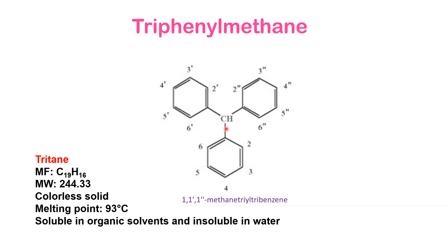If you have not yet seen the video on diphenylmethane, please watch it first — then it will be easy to understand triphenylmethane. As the name says, it is tri, meaning three phenyl groups — three benzene rings present as substituents on the central methane. Out of the four hydrogens on central methane, three are replaced with benzene rings, and the last hydrogen remains on the central carbon.